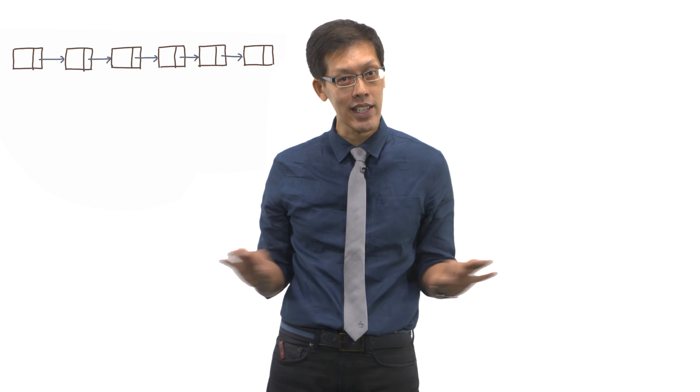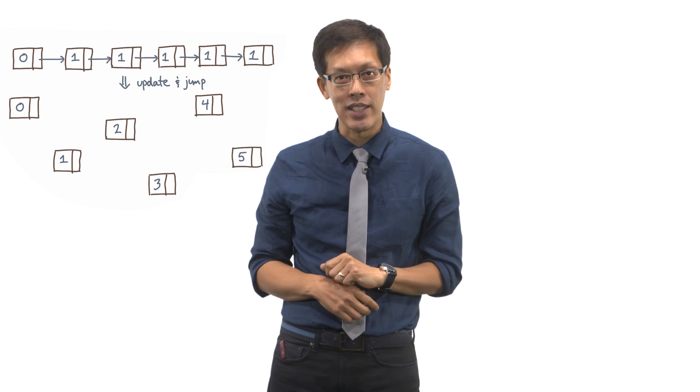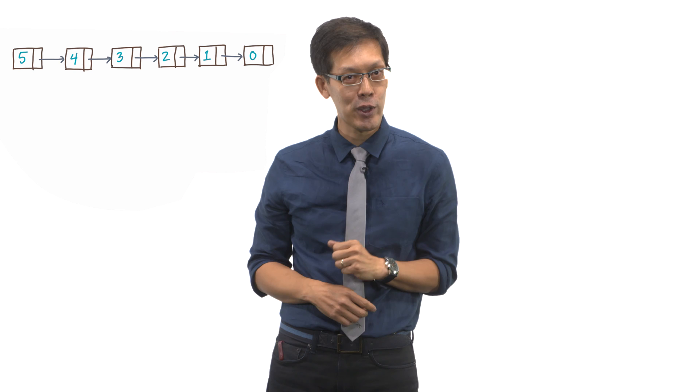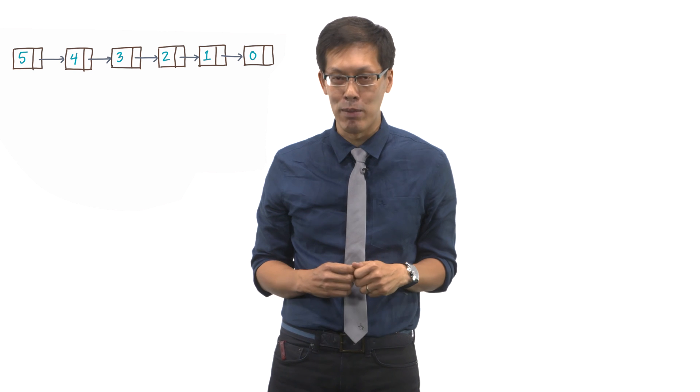Now this scenario is an analogy for a well-known problem in parallel algorithms called list ranking. You are given a singly linked list and a pointer to the head. What you want to compute is the position of every node in the list. Sequentially, it's trivial to do. But if you have multiple processors, can you use parallelism to do it faster?